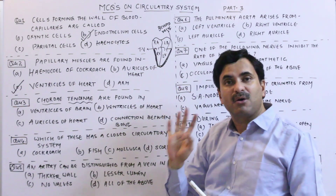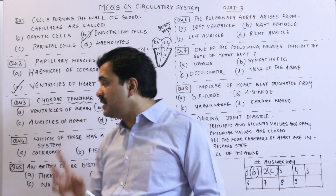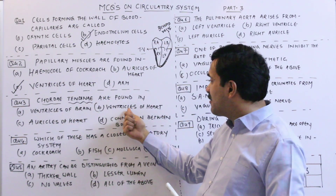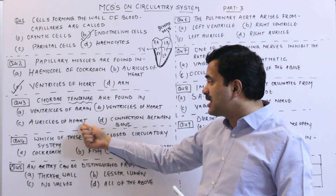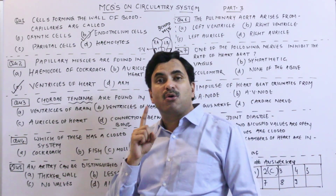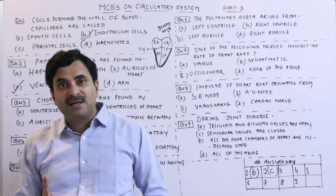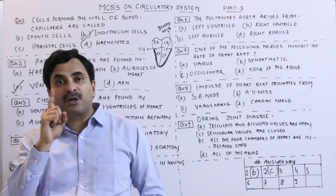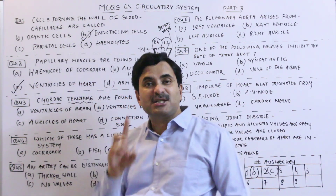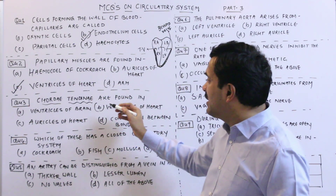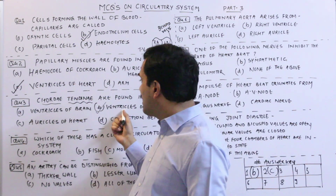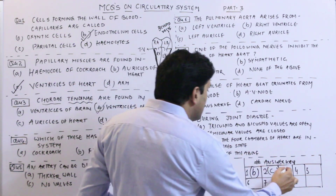Chordae tendineae are found between the tricuspid and bicuspid valves and the papillary muscles of the ventricles. One end of the chordae tendineae is attached to the papillary muscles of the ventricles, while the other end is attached to the bicuspid and tricuspid valves. So the answer is B — chordae tendineae are found in the ventricles of the heart.